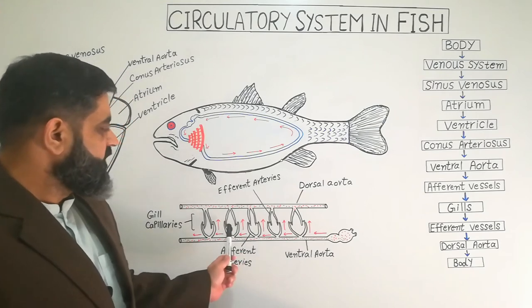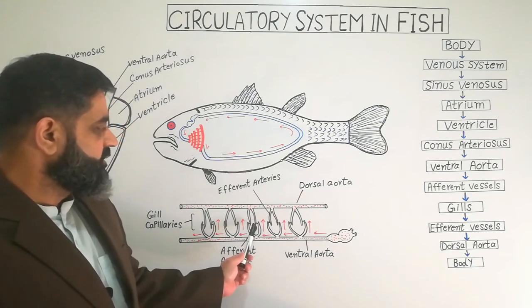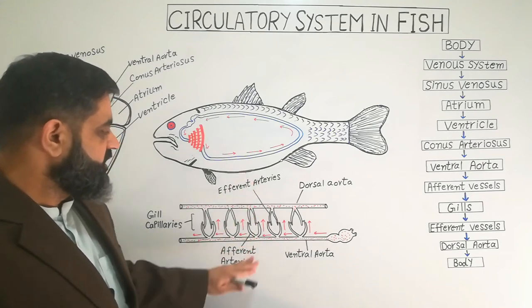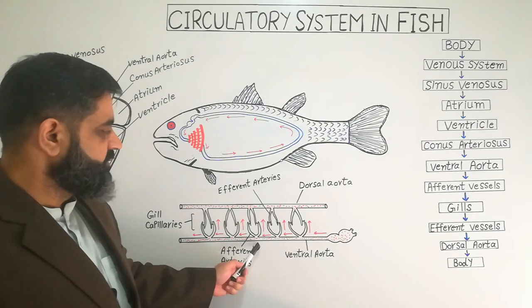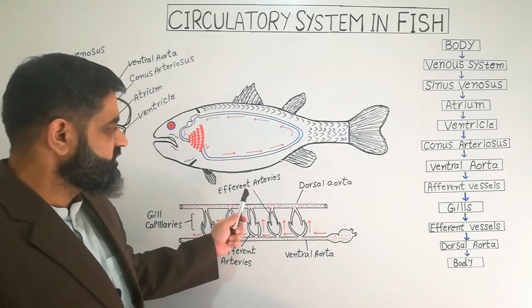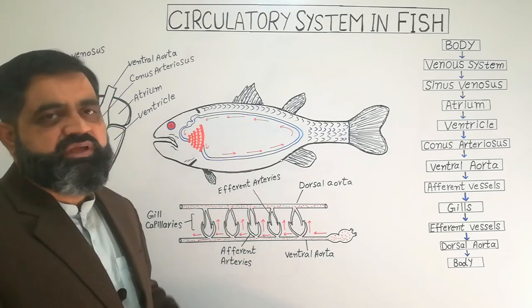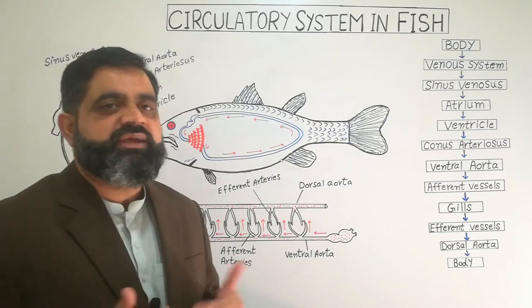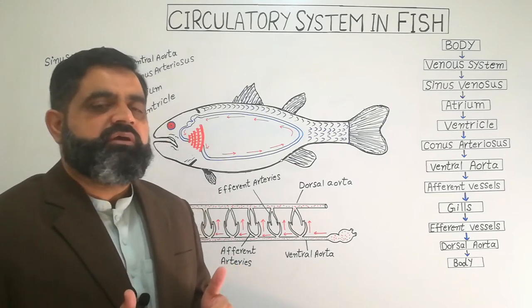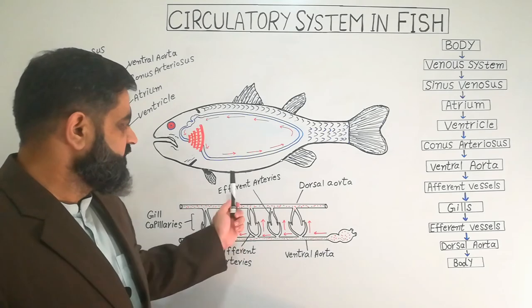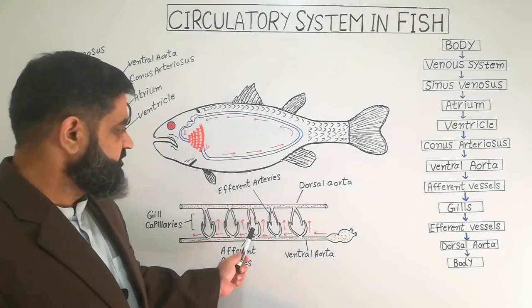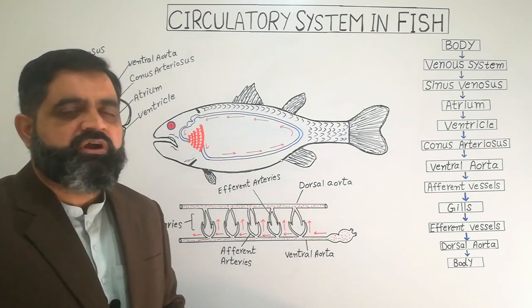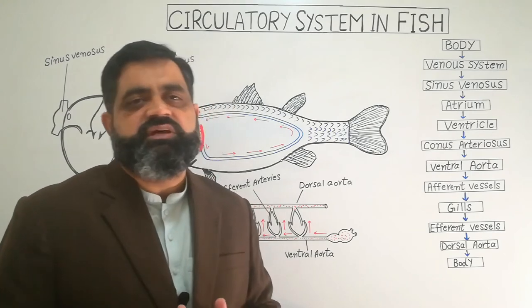After oxygenation, the blood capillaries join again to form efferent arteries. To clarify: afferent arteries take blood toward the gills, while efferent arteries take blood away from the gills. When the efferent arteries join together, they form a large vessel known as the dorsal aorta. The dorsal aorta contains oxygenated blood, which is then supplied to the whole body.